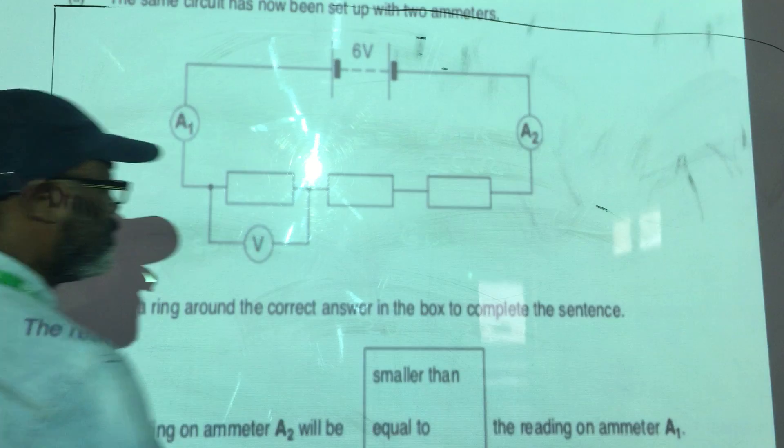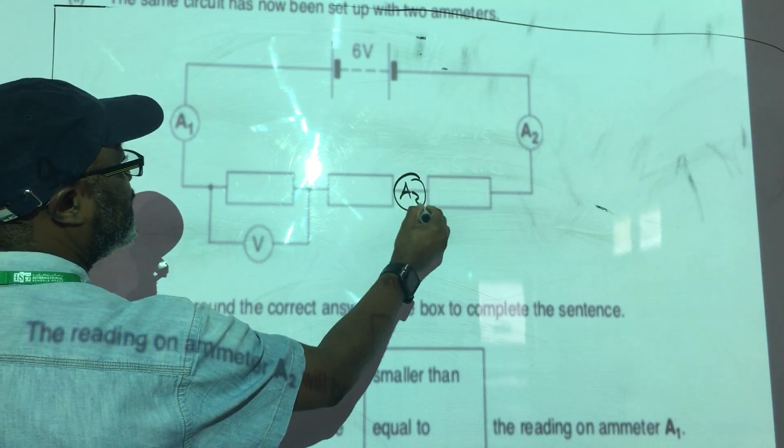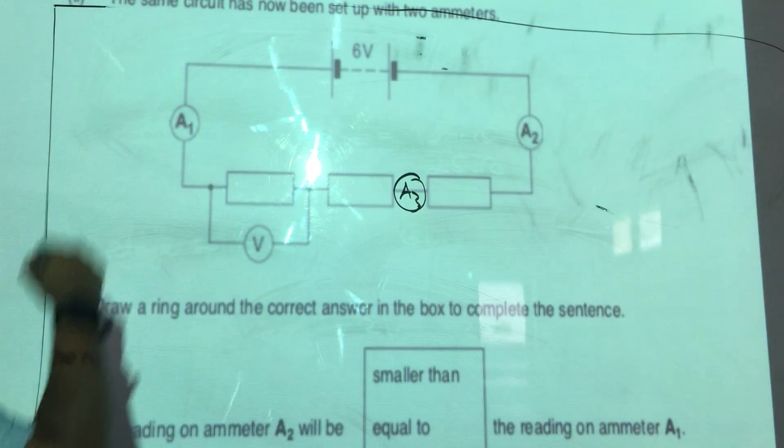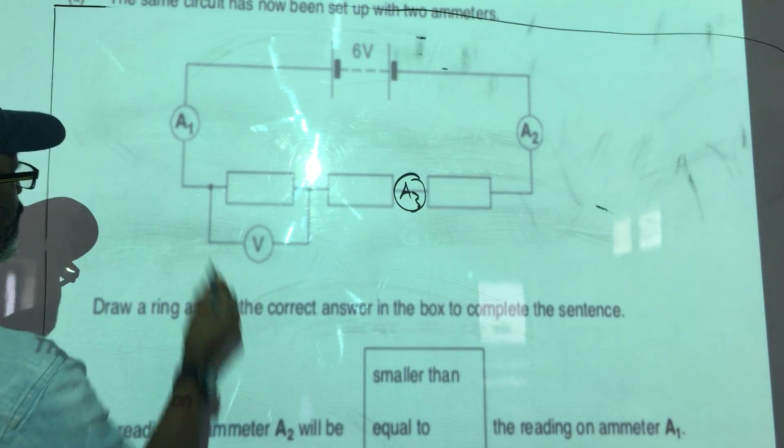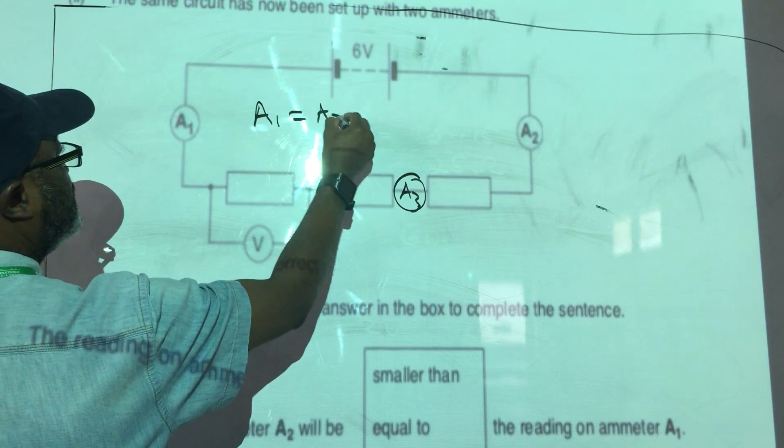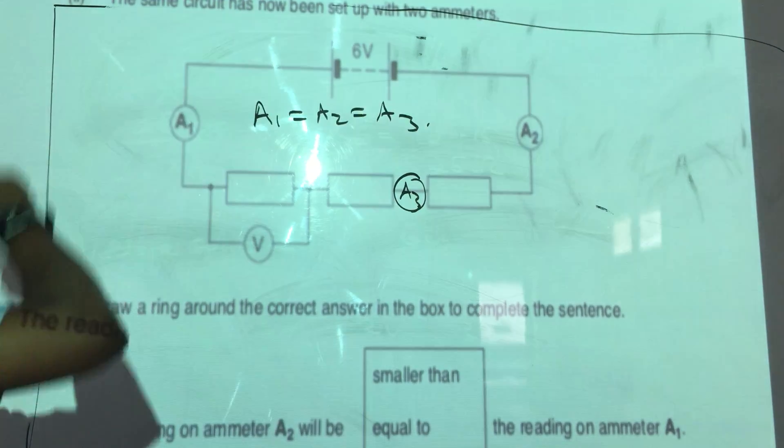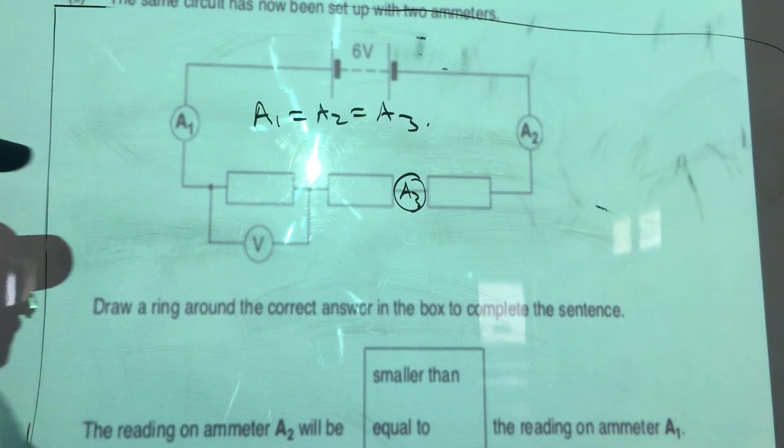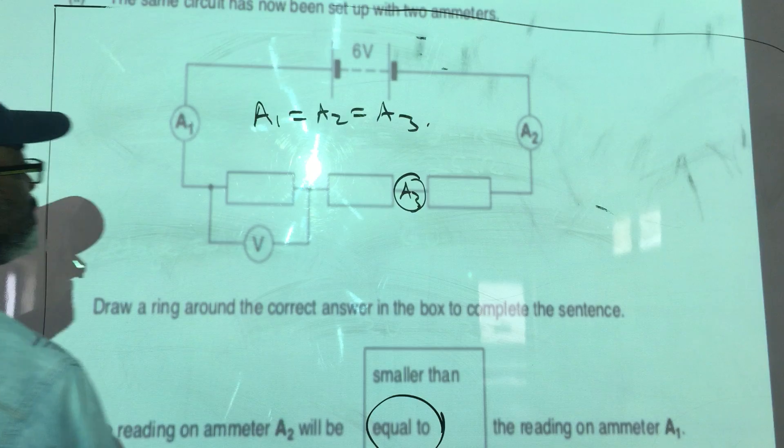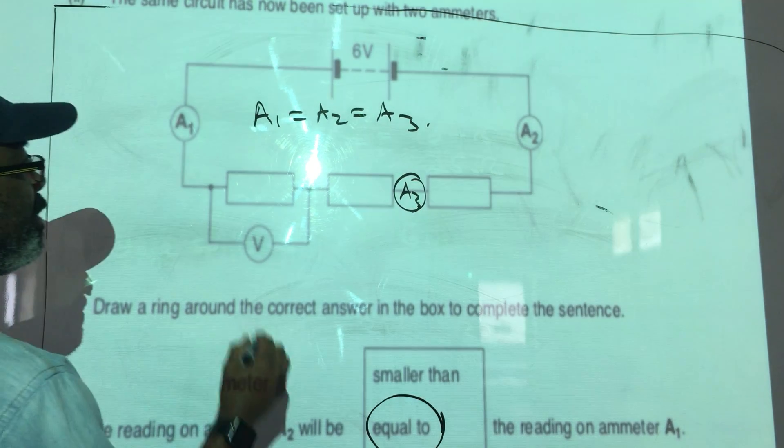Because it is a series circuit, A1 should be equal to A2 should be equal to A3. It doesn't matter where you put the ammeter; the current will always be the same. And this is based on the principle that current is the same at any point in a series circuit.